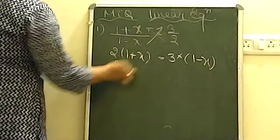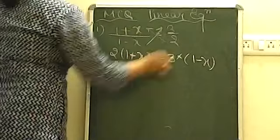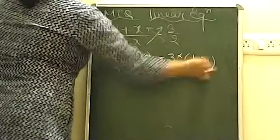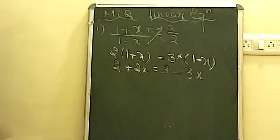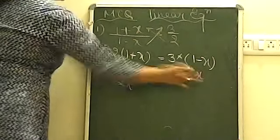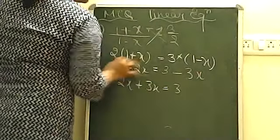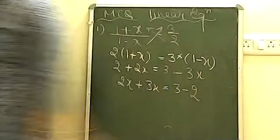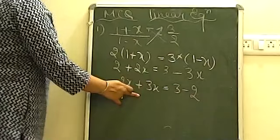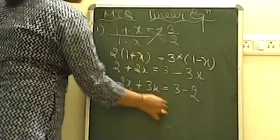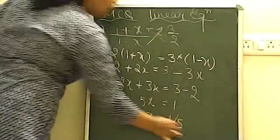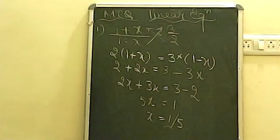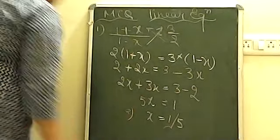Solving gives 2 + 2x on the left and 3 - 3x on the right. Bringing x terms together: 2x + 3x = 3 - 2, so 5x = 1, giving x = 1/5. The answer for MCQ number one is option A: x = 1/5.